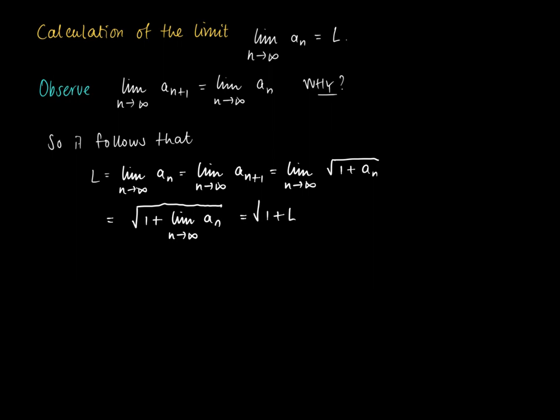But we know the limit of n to infinity aₙ since this equals L. So final step, the pre-last equality was due to the direct substitution property for limits. But now we might solve for L since we now know that L equals the square root of 1 plus L.